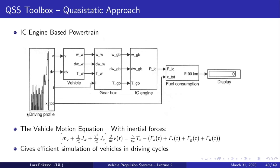For example, we have the QSS toolbox that you will use in this course. You can see we have the driving profile — here you recognize the NEDC, which has velocity, acceleration, and gear number. It propagates first to the vehicle, then to the gearbox, and then to the engine. Finally, when we have fuel flow from the engine, we can integrate it and get the total fuel consumption over the cycle. This is very efficient — you can compute a complete driving cycle in less than a second. Inside these boxes is essentially what we have gone through previously: the vehicle model uses Newton's second law, and then we have the gearbox and internal combustion engine.